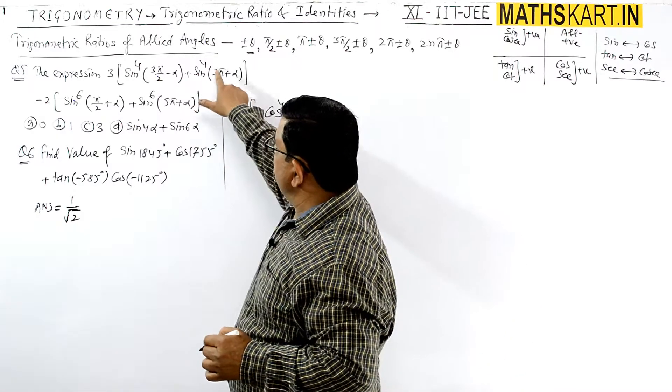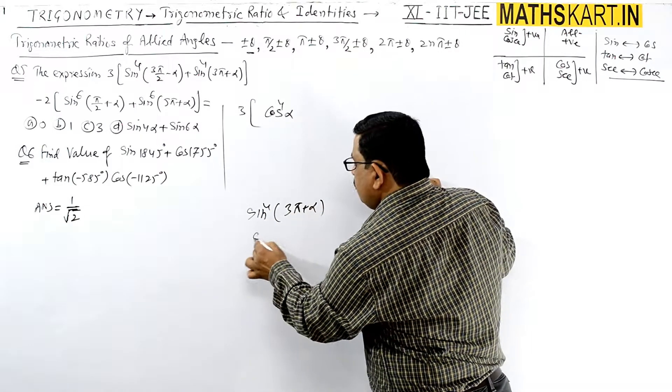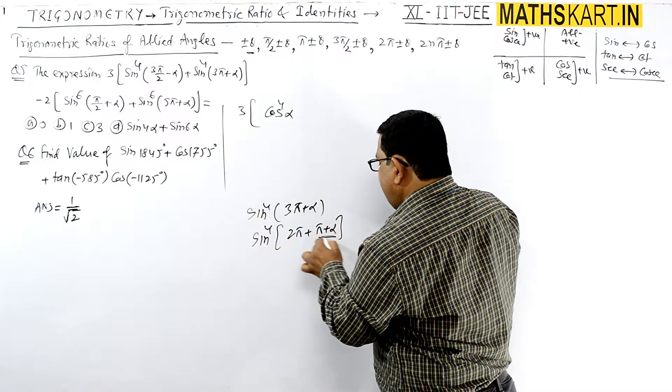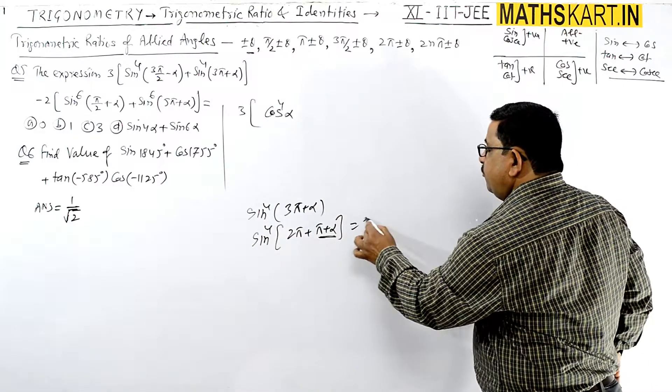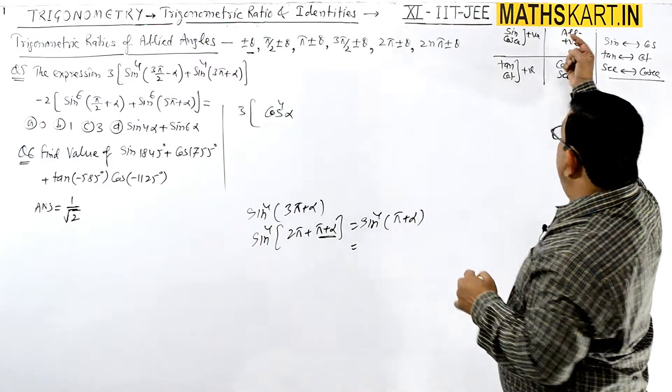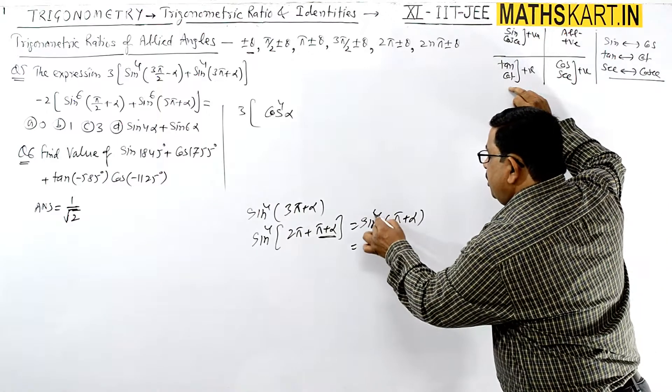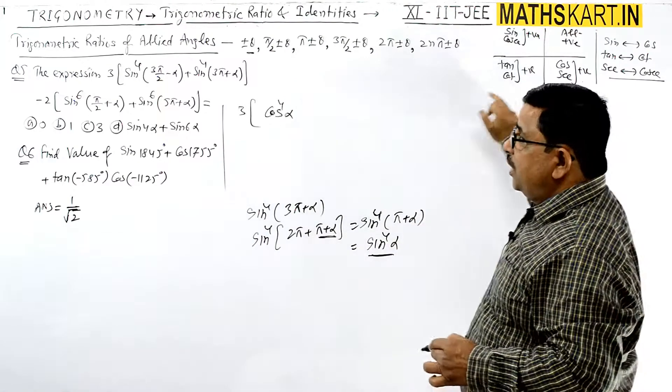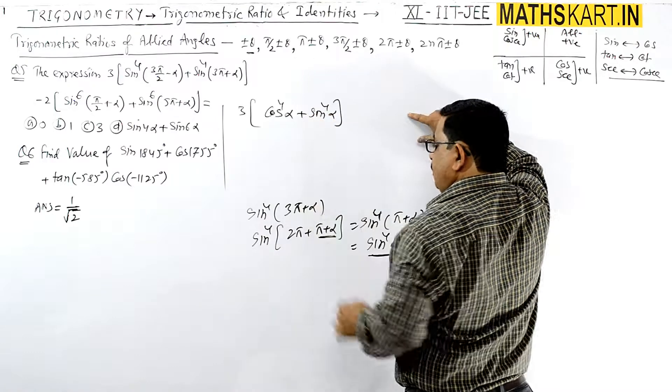Now sin^4(3π + α). We can write this as 2π + π + α. If we treat sin(2π + θ), this will be sin^4(π + α). And 180 plus θ is negative, but because even power is there, that's why it remains sin^4 α. So this value is sin^4 α, it will convert to the same.